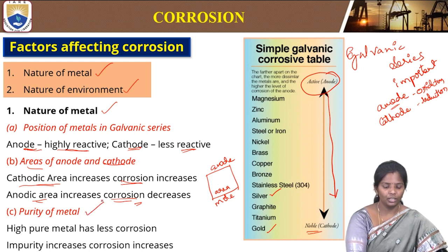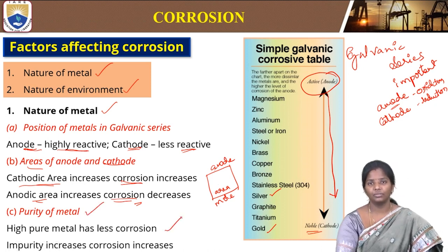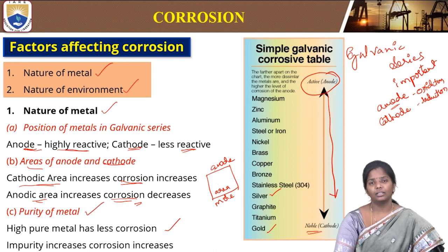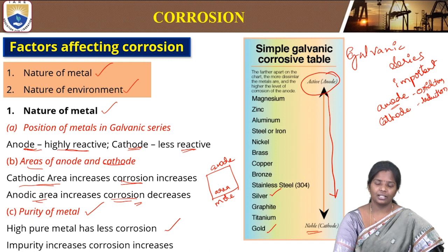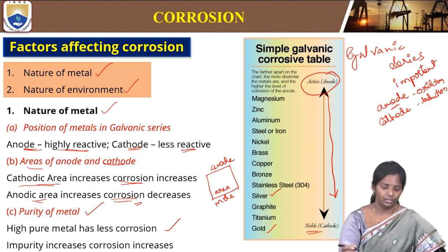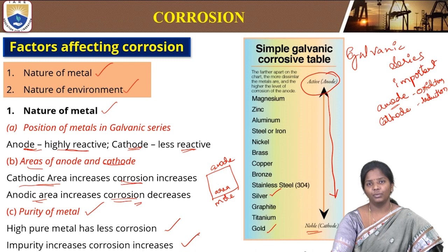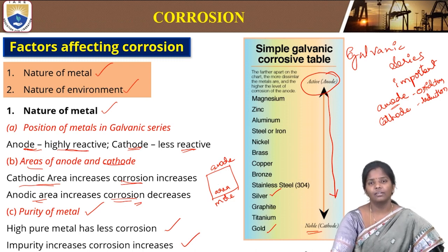Then purity — high pure metals have less corrosion. During any applications in building or machinery, the purity of metal is very important because it is less reactive and becomes less corroded. The presence of impurities like oxides or any other gases will increase the corrosion.